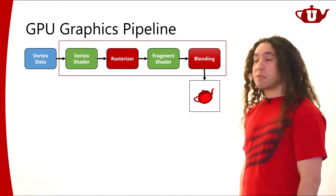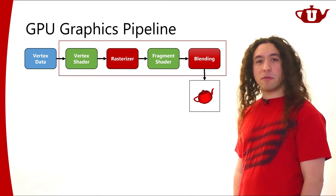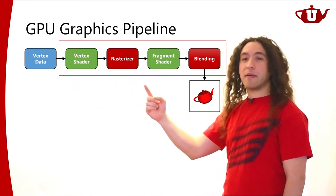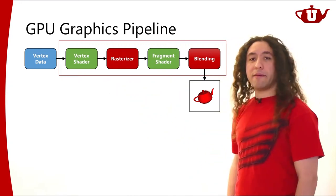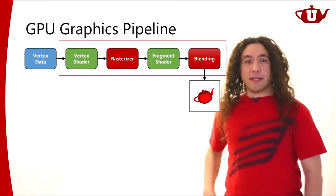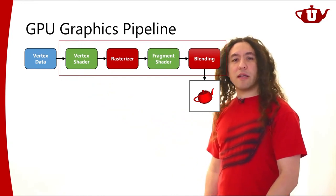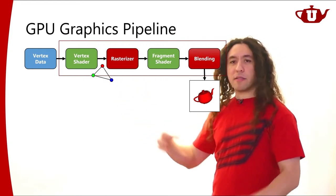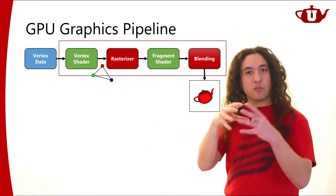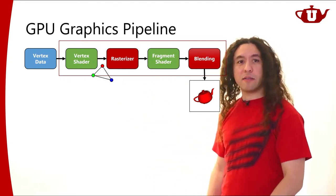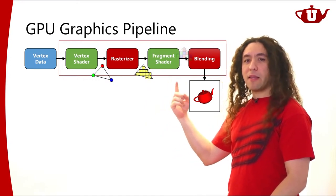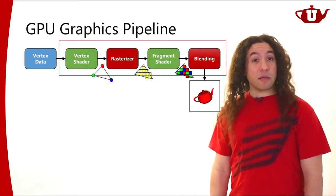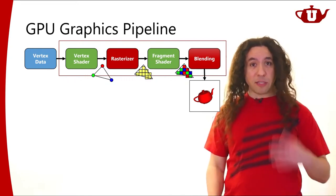Let's start with the GPU graphics rendering pipeline. Vertex data goes through the vertex shader, the rasterizer, the fragment shader, and finally with blending we have our final rendered image. The output of the vertex shader is a bunch of vertices with some primitive connection. Right before the rasterizer, the vertices form primitives — triangles basically — which are used in the rasterizer for generating fragments. Now there are optional extensions to this pipeline, and the geometry shader is one of them.